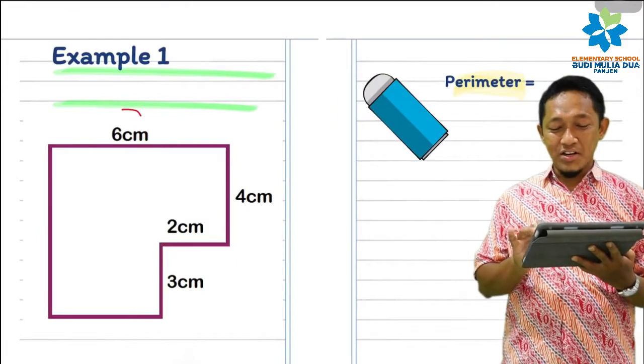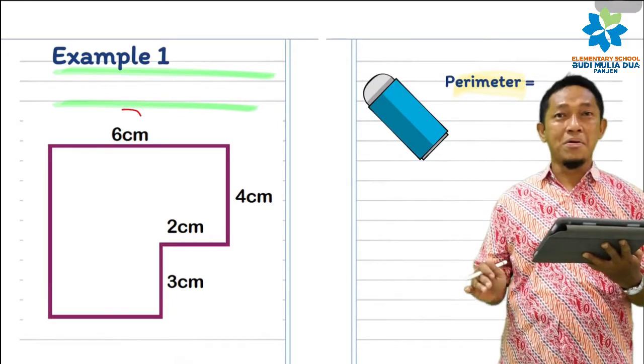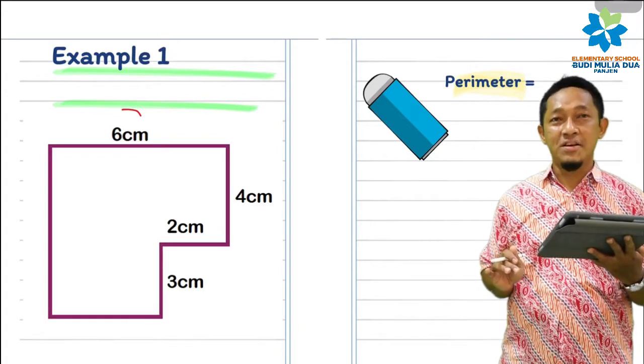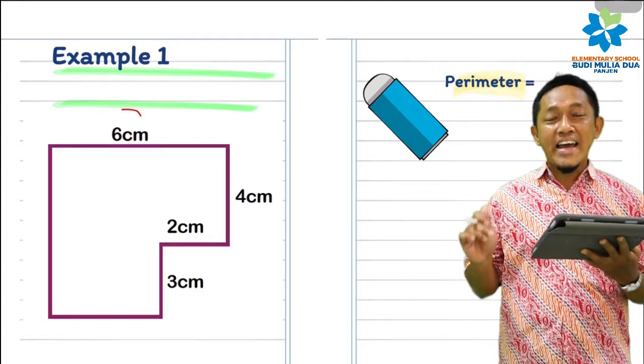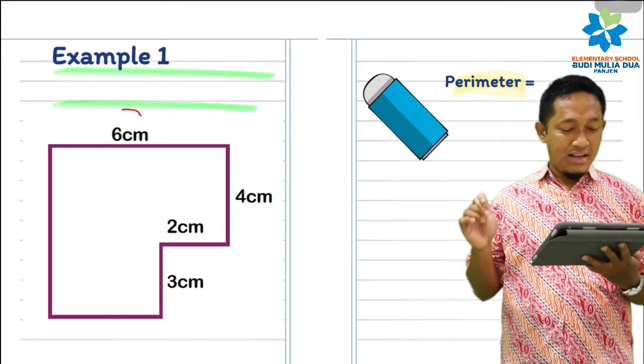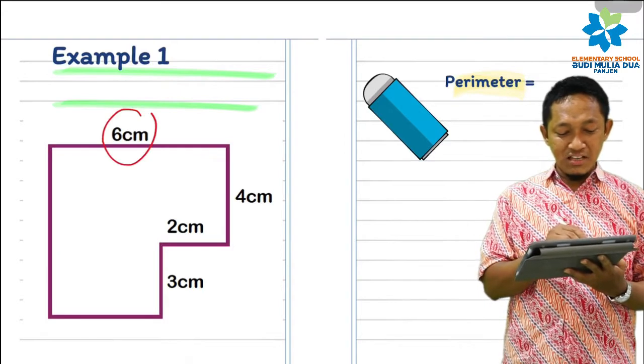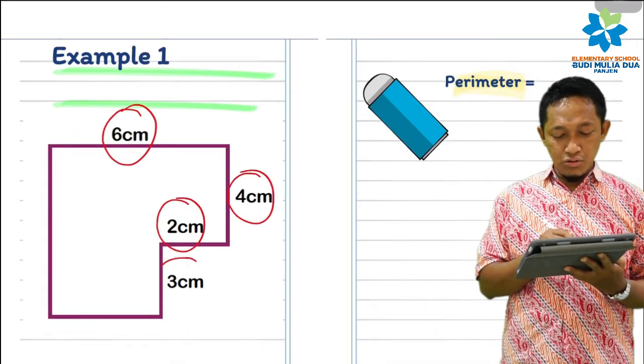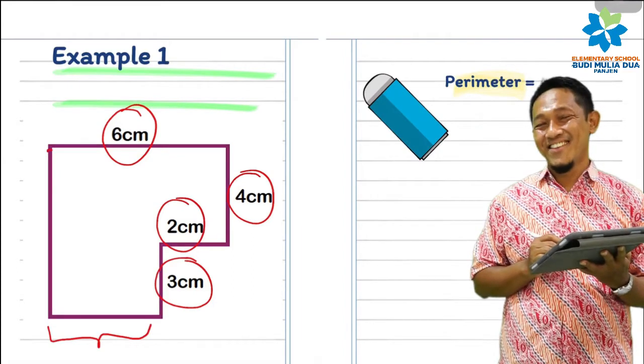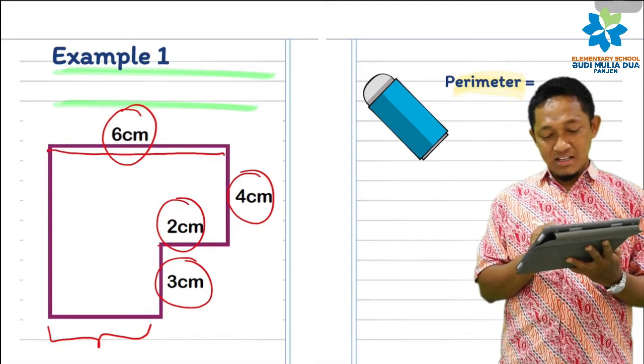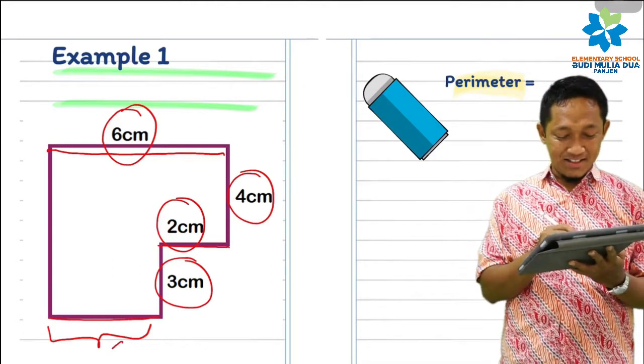Now I will show you the picture - a polygon shape or irregular shape. This is not a rectangle, not a square, because the shape is irregular. How many sides? 1, 2, 3, 4, 5, 6 - hexagon, but irregular hexagon. Can you find out the perimeter of this polygon? Easy! Remember: add all of the sides together. Here we have 6 cm, 4 cm, this is 2 cm, this is 3 cm. Now, how much is this side? Easy! The total length is 6 cm, and here we have 2 cm, so this side is 4 cm. That's right!